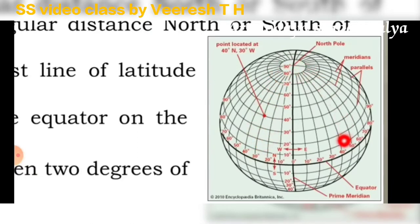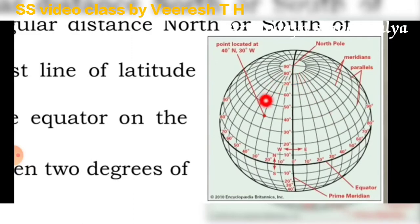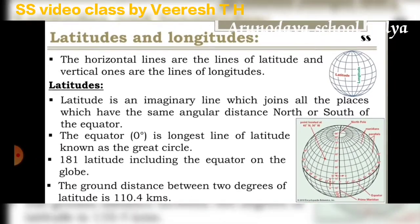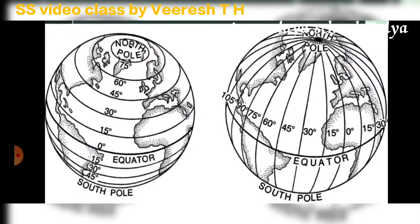Look at this picture — horizontal lines are latitudes, vertical lines are longitudes. One more example: horizontal lines are latitudes, vertical lines are longitudes.